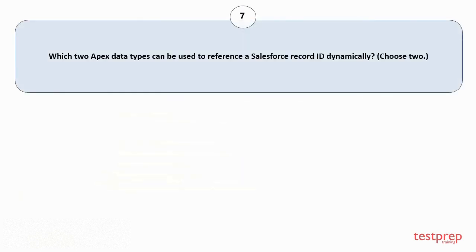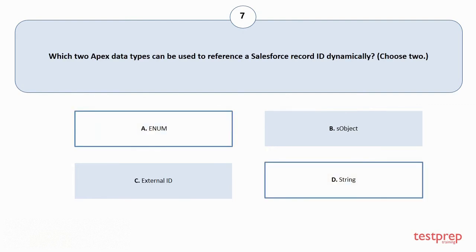Question number 7: Which two Apex data types can be used to reference a Salesforce record ID dynamically? Choose two. The correct answers are option A and D.